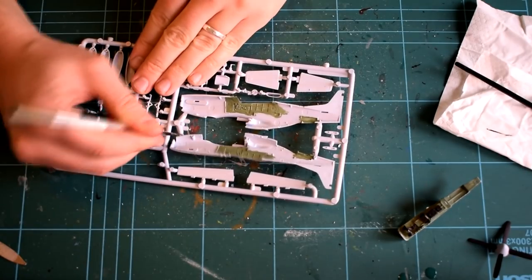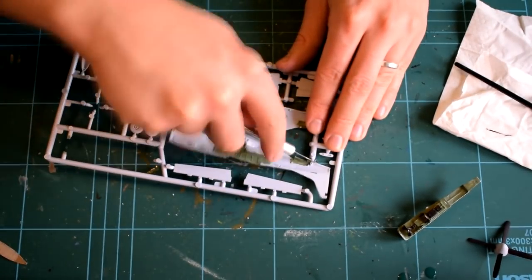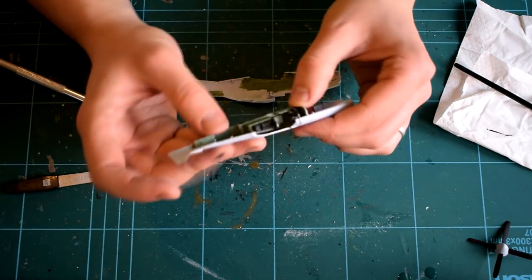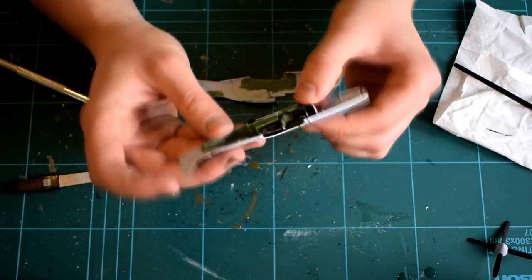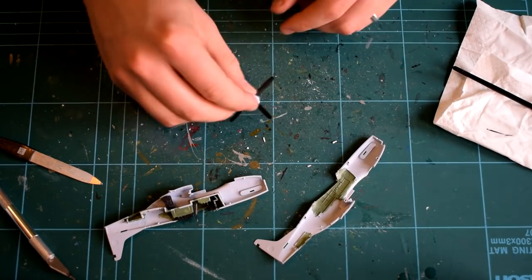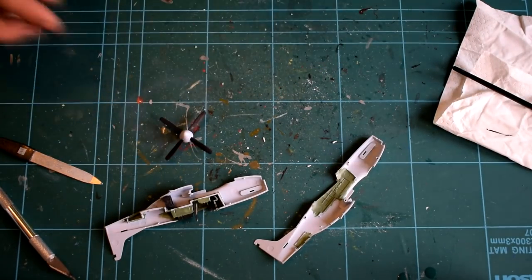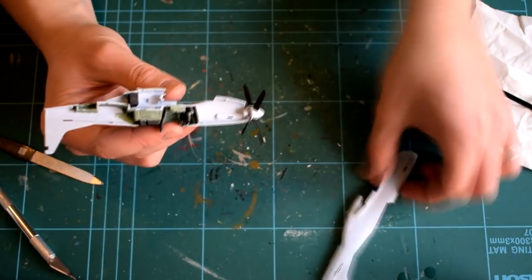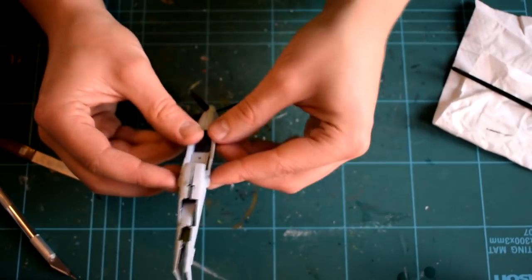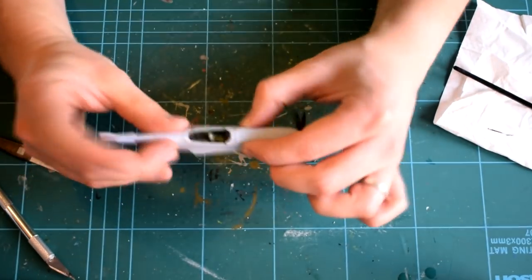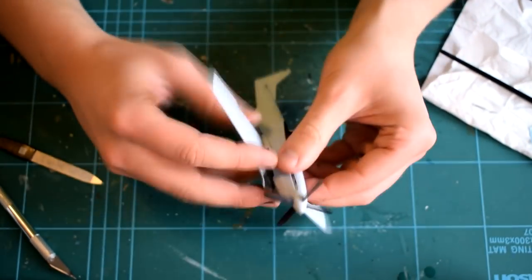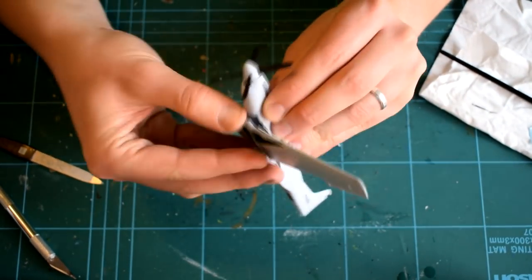The fuselage halves were then cut from the sprues, cleaned up and the cockpit assembly cemented inside one of the halves. The propeller assembly then received the retaining part and was inserted into its notch in the nose of the fuselage. The other half of the fuselage was then sandwiched on top and held in place until the cement had cured.